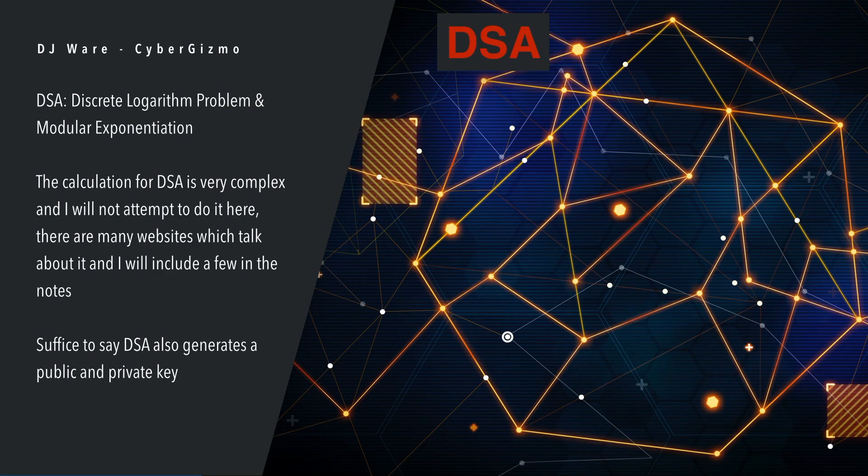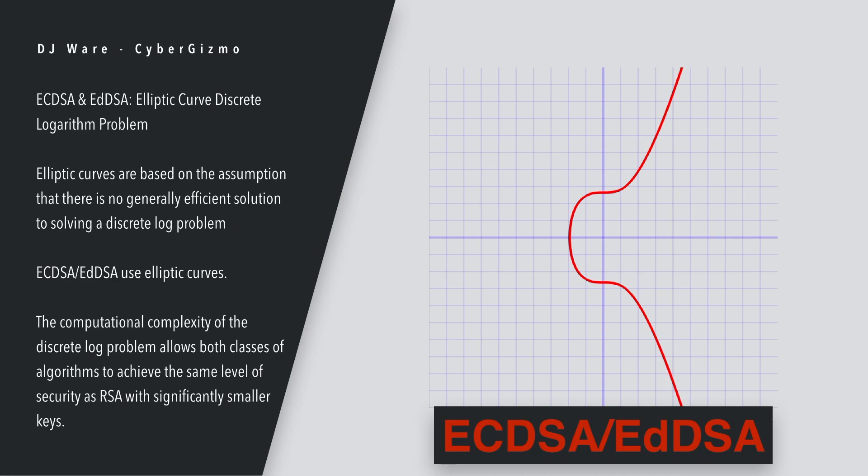The other one is DSA — that is a logarithmic problem and the calculation for DSA is very complex. Suffice it to say that DSA also creates a public and private key. There's a lot more to learn about DSA than just that. The two newest ones on the block are ECDSA and EDDSA — those are elliptic curve algorithms. They do try to solve a discrete log problem similar to what DSA did, but they're really offering more complexity.